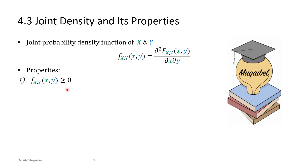The first property: the PDF is always going to be positive. It's a density of probability — not probability itself, but a density of probability. So if you integrate under the curve, you should get a positive number. The PDF is always a positive quantity — zero or positive, always greater than or equal to zero.